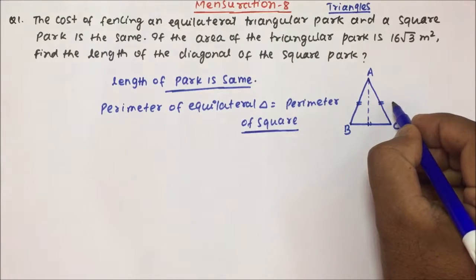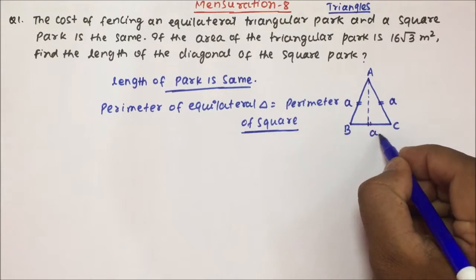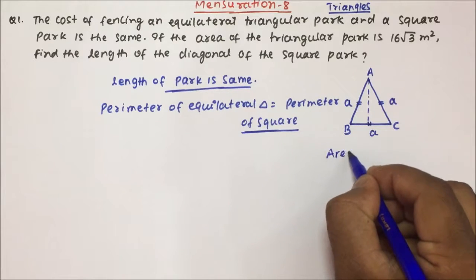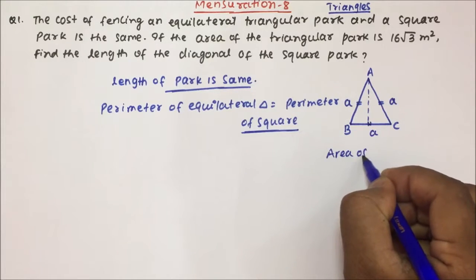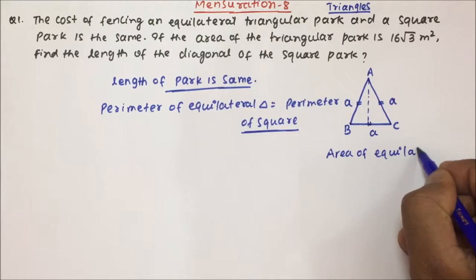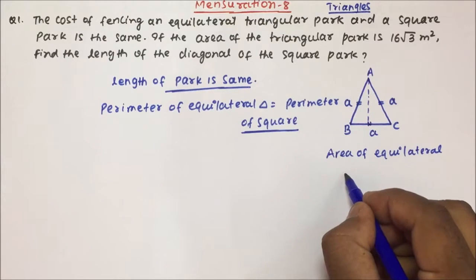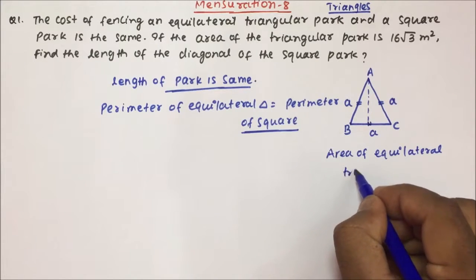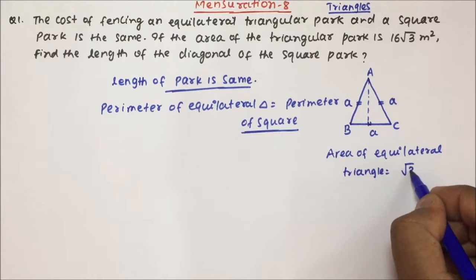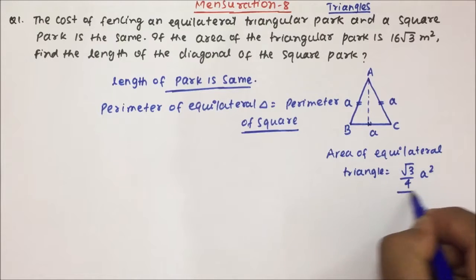Now, if we talk about the triangular park — equilateral triangle — then all the three sides will be equal. Now, area of equilateral triangle: you can find it out or keep it in mind. The area of equilateral triangle will be equal to √3/4 × a².